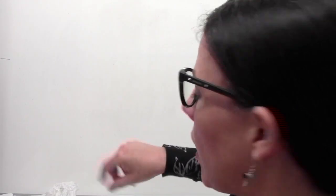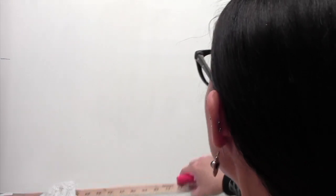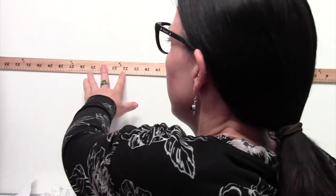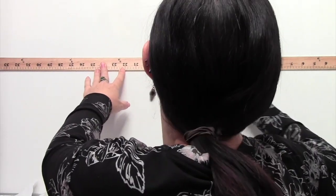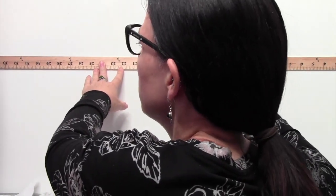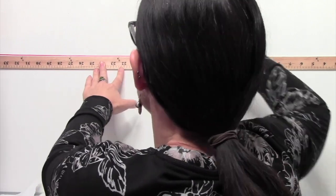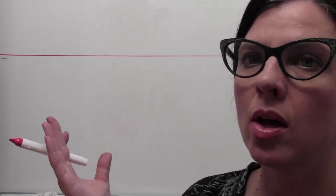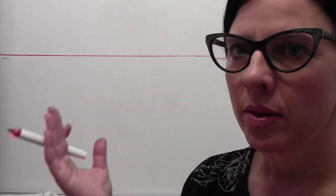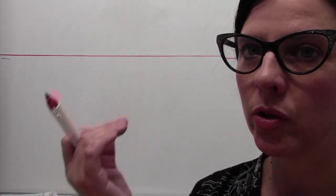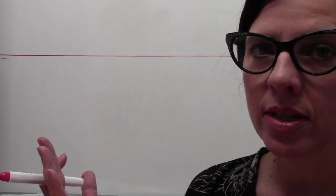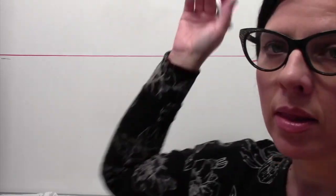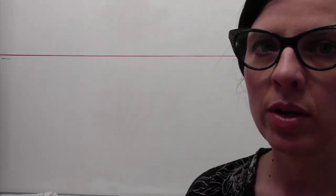So I'm going to begin by establishing the horizon line. My first step is to create just a simple line. Now the horizon line corresponds to your line of sight. In fact, as you can see, I've tried to line it up with my eyes just to kind of reinforce that point.